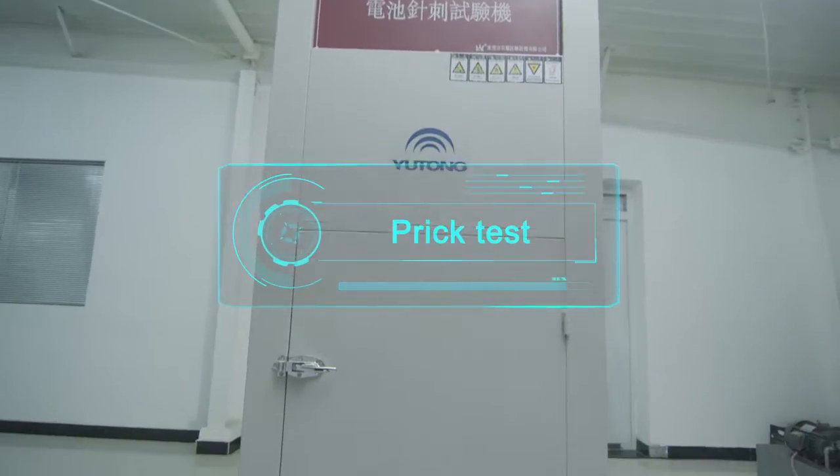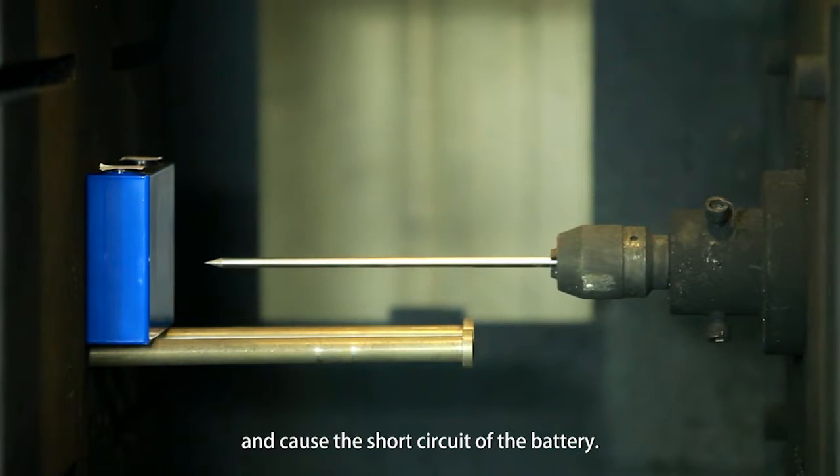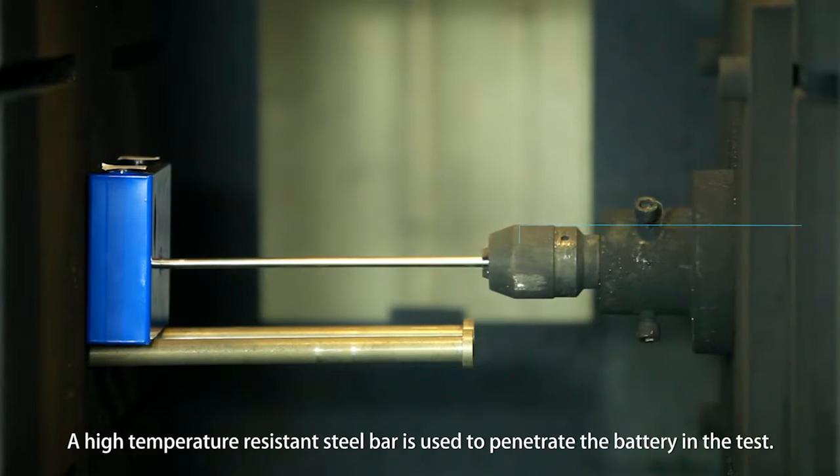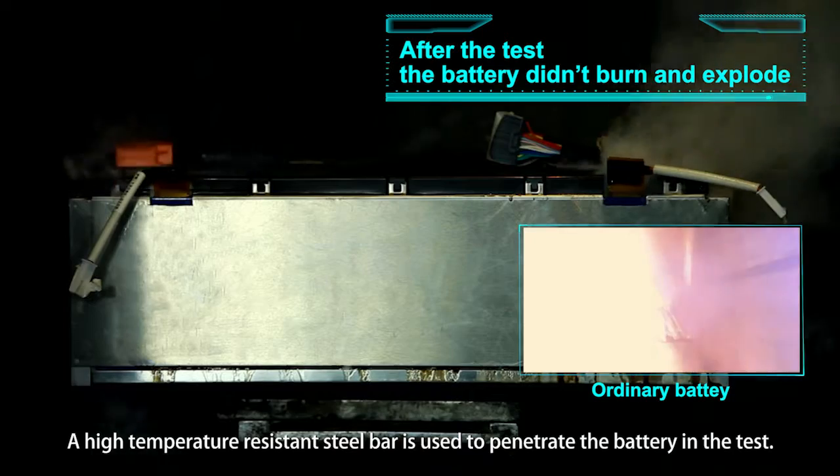Prick test. Simulate a foreign object pricks into the battery and causes the short circuit of the battery. A high temperature resistant steel bar is used to penetrate the battery in the test.